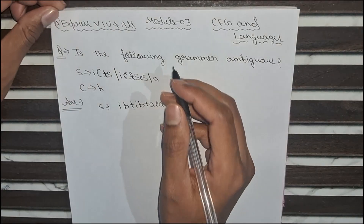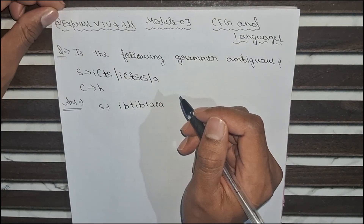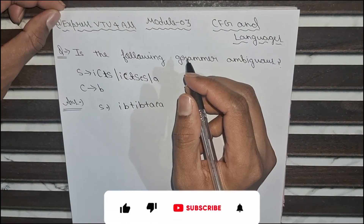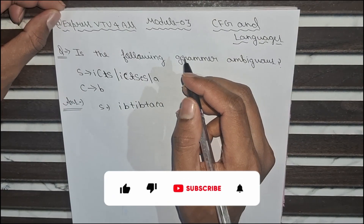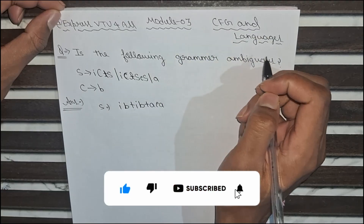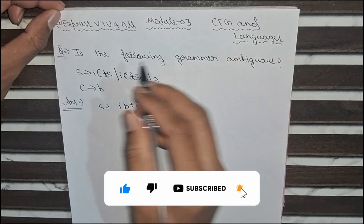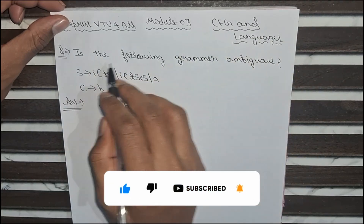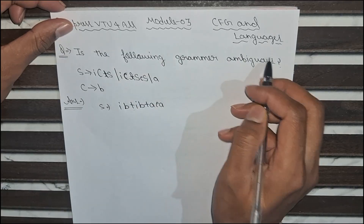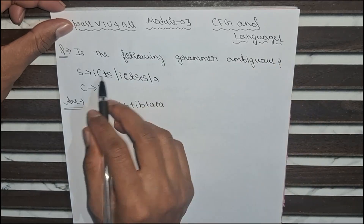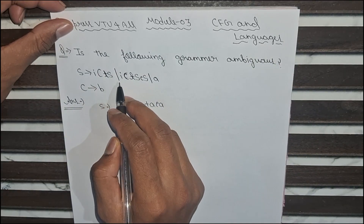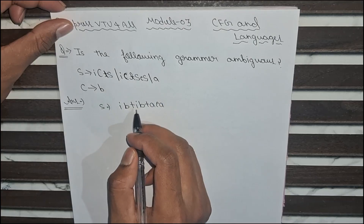Hello everyone, welcome back to Express Video For All. Today we are going to solve a very important question from Module 3: Context Free Grammar and Languages. The question is: the following grammar is ambiguous or not. Here is a grammar given, and we have to find if this grammar is ambiguous or not.